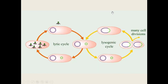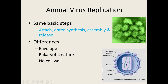For viruses that infect animal cells, it still has those same five basic steps: attachment, entry, synthesis, assembly, and release. However, there are some differences in each of those steps. Many viruses that infect animals or humans have envelopes, which can make entry more difficult. Our cells are eukaryotic, so synthesis of parts takes place partly in the nucleus. We also don't have cell walls like bacteria do, so there are differences in the steps.